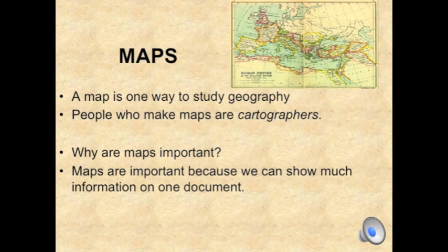Section three. This is an important section — if you don't get this one, you're going to be stuck as well. It's about maps and parts of the maps and things like that. A map is one way to study geography. People who make them are called cartographers. They're important because they can give you a ton of information in one document.